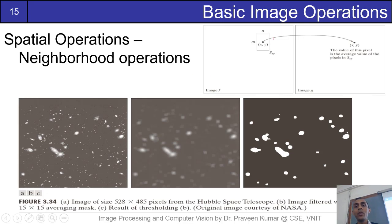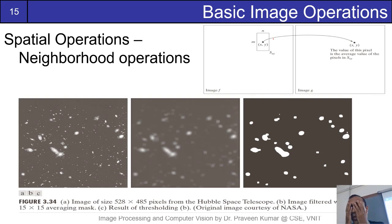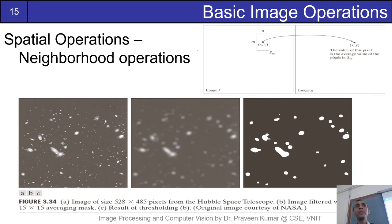So right, till now we have discussed element-by-element operations — either multiplications, additions, or subtractions. Sometimes operations may be of a neighborhood kind, where instead of just taking corresponding pixels from more than one image, we may want to take all the pixel values in a particular region.